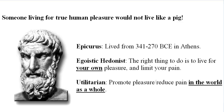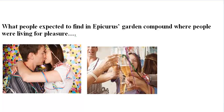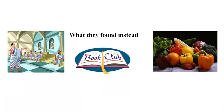Epicurus lived in ancient Greece not long after the time of Aristotle. He started a commune outside the city of Athens, Aristotle's hometown, and encouraged everyone in his commune to seek pleasure together inside his garden estate. Rumors circled about Epicurus and his pleasure compound — stories emerged that the people living with Epicurus engaged in drunken orgies, unlimited sex, wine, and gorging on food.